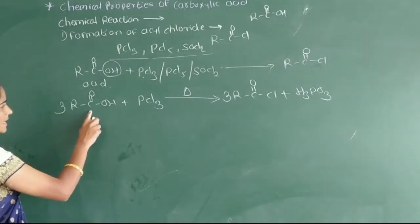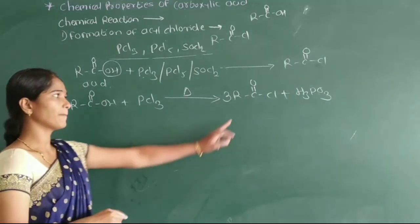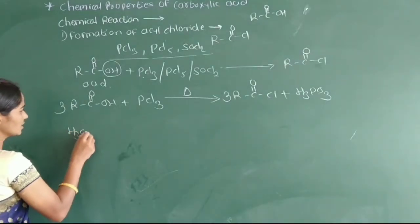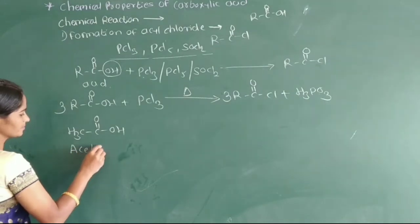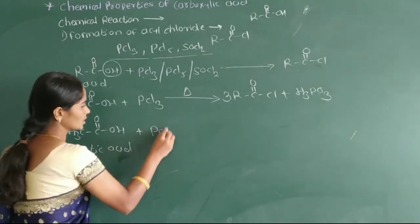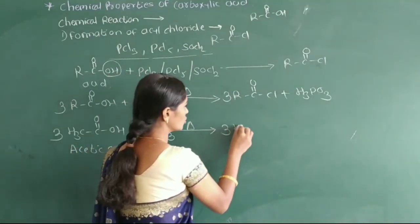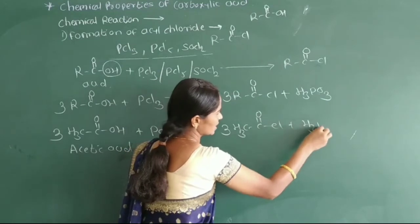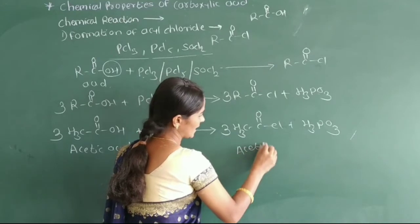In this reaction, the hydroxyl group attached to the carbonyl carbon is replaced by chloride. For example, if we take CH3COOH, which is acetic acid, this acetic acid reacts with phosphorus trichloride on heating to give three moles of CH3COCl plus H3PO3.